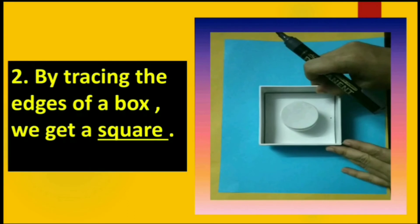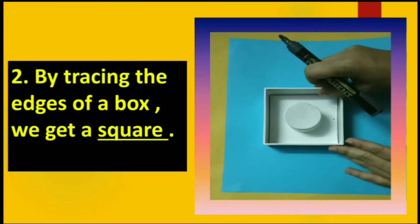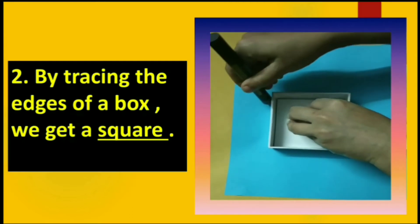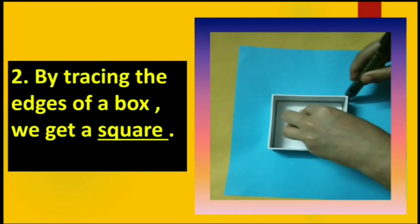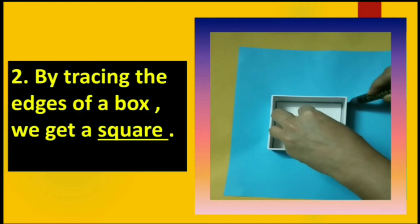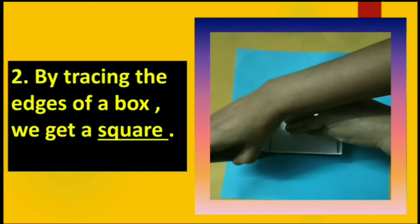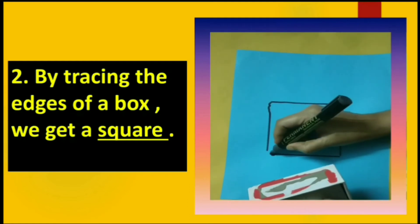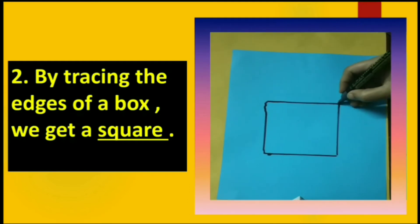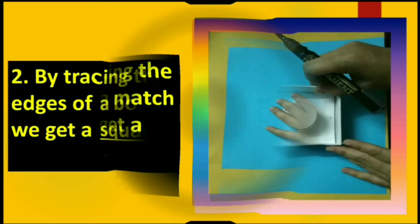Next one is by tracing the edges of a box, we get a square. Now children, here with the help of a box, a square shape is formed just by tracing the edges of a box. Yes, this is how we can get a square shape.